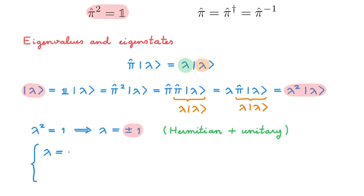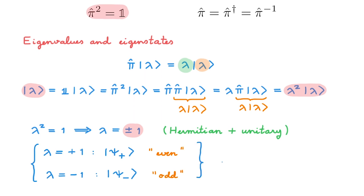For the eigenvalue plus 1, we label the corresponding eigenstate psi plus, and call it an even state. Similarly, for the eigenvalue minus 1, we label the eigenstate psi minus, and call it an odd state. Using these definitions, the eigenvalue equation of the parity operator becomes this. More generally, we will say that even and odd states are states of definite parity. You'll immediately see that position and momentum eigenstates are not parity eigenstates, but parity eigenstates feature in many quantum systems, including the energy eigenstates of the harmonic oscillator or the hydrogen atom.